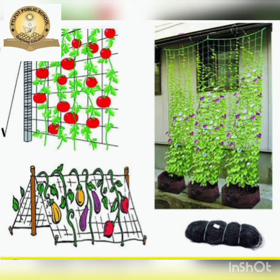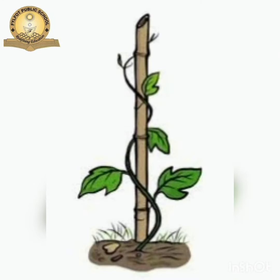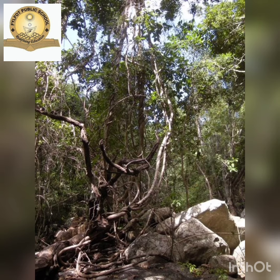Climber plants are the plants whose stems are weak, thin and long. They cannot stand on their own. Such plants are called climbers. They always need the support of another plant, stick or wall to stand.